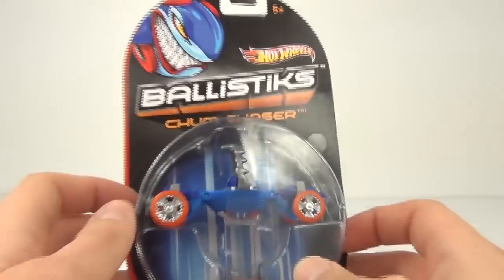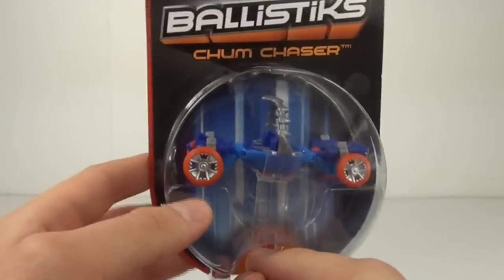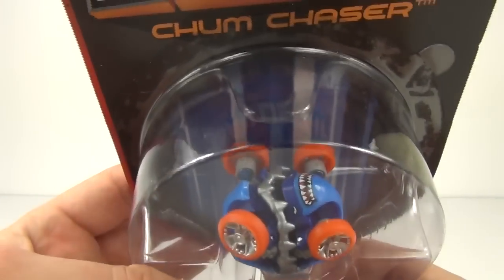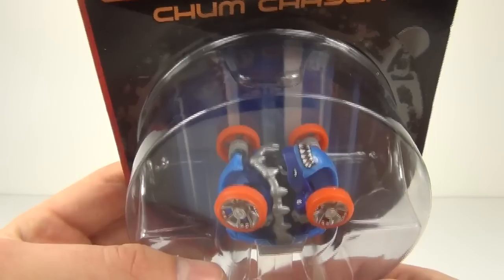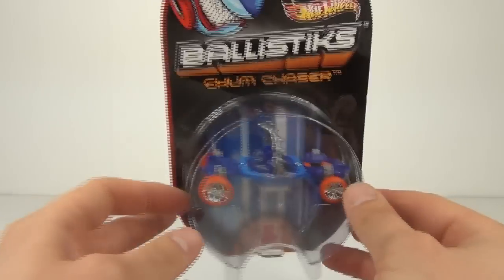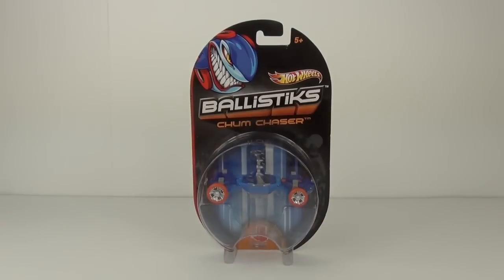So there you can see the car as it is in the packaging. What's nice about this packaging is you can pull this tab at the bottom and you can see exactly what the car looks like in the balled up position inside the packaging. But let's open this up and see what it can do.